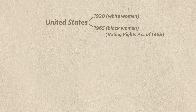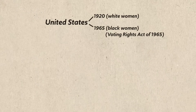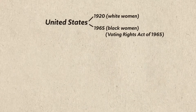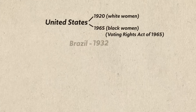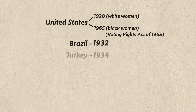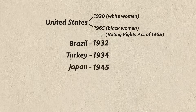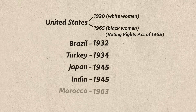With respect to voting and holding office, women gradually gained these rights over the 20th century. In the United States, white women were granted the franchise in 1920, and black women not until 1965 when Congress passed the Voting Rights Act. In Brazil, women had to wait until 1932; in Turkey 1934, Japan 1945, India 1945, and Morocco 1963.